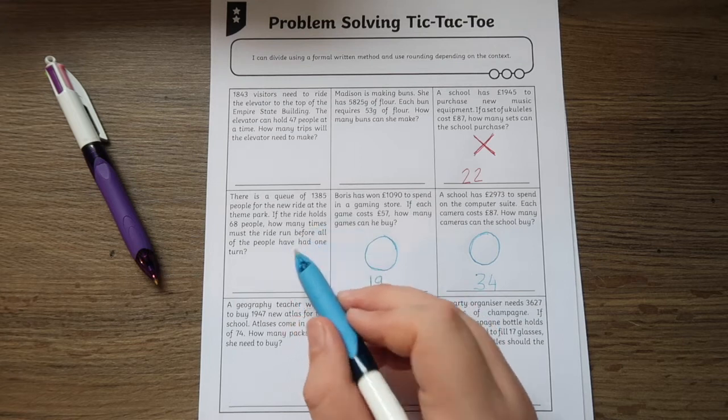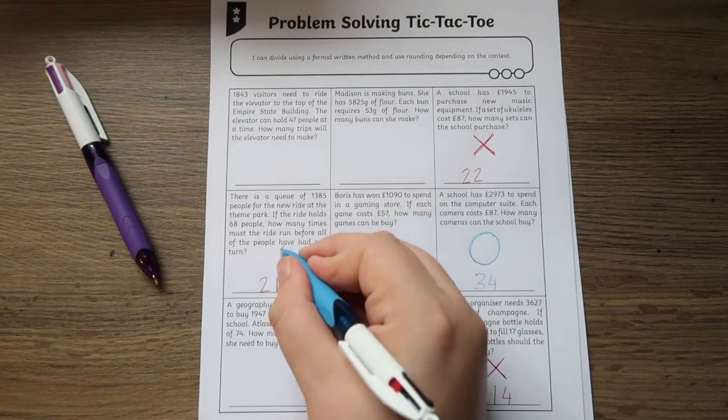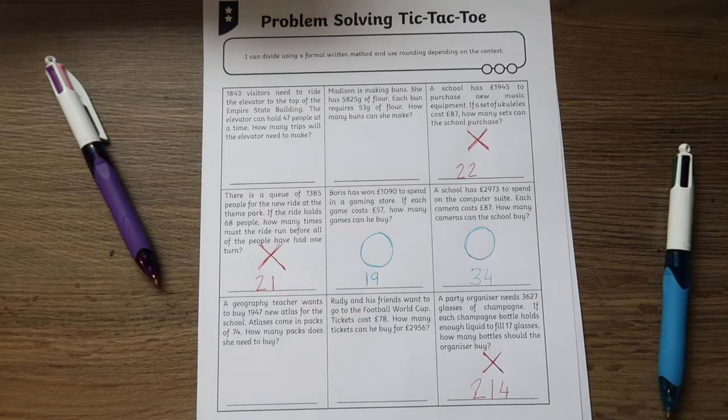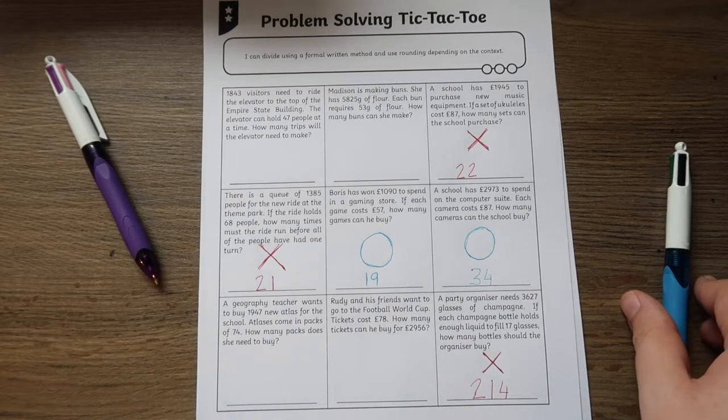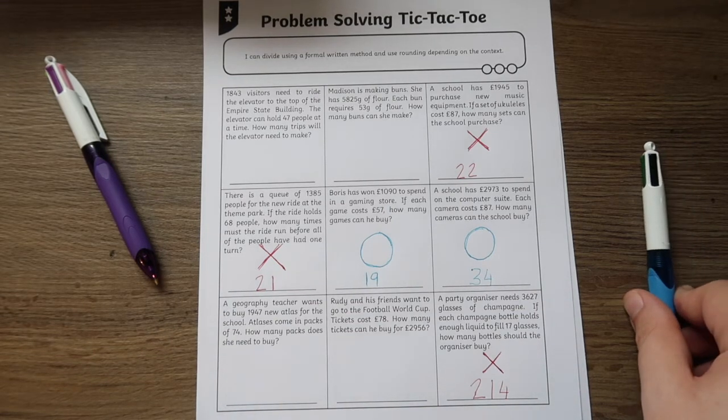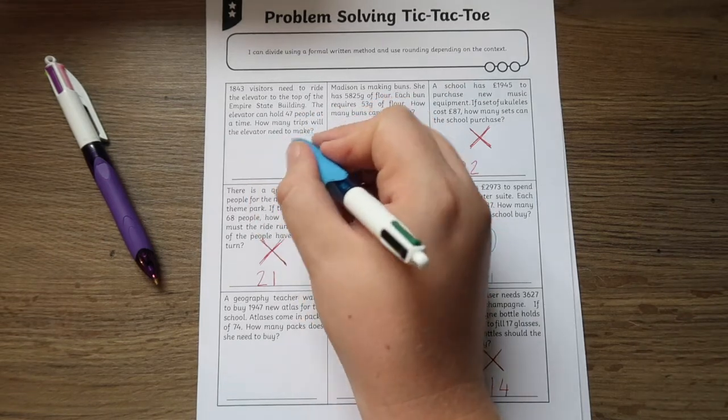Once the first person has answered their chosen question and filled in the box with either an X or an O, then it's the next person's turn. The first person to have three of their symbols in a row is the winner.